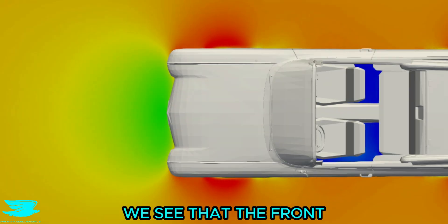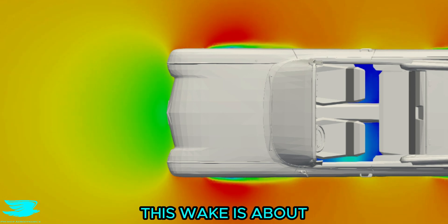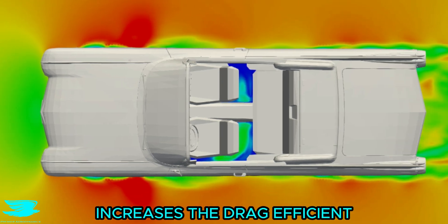From this angle, we see that the front wheels create a very large wake. Compared to modern cars, this wake is about twice as large. As it travels down the length of the car, it just grows and increases the drag coefficient.